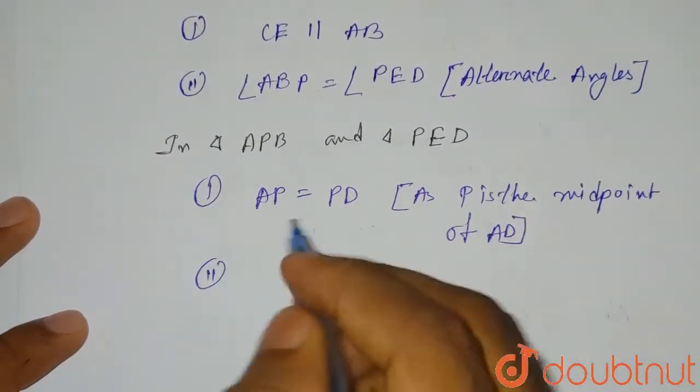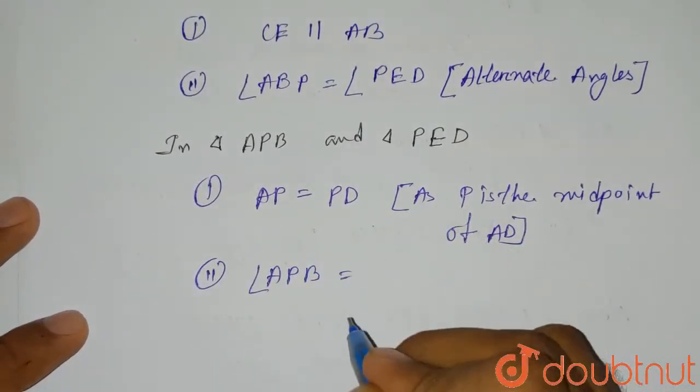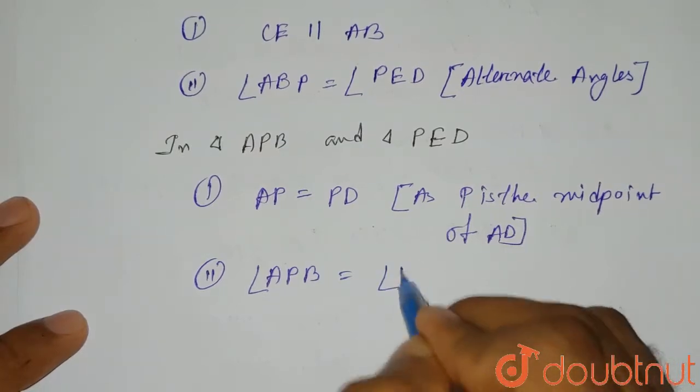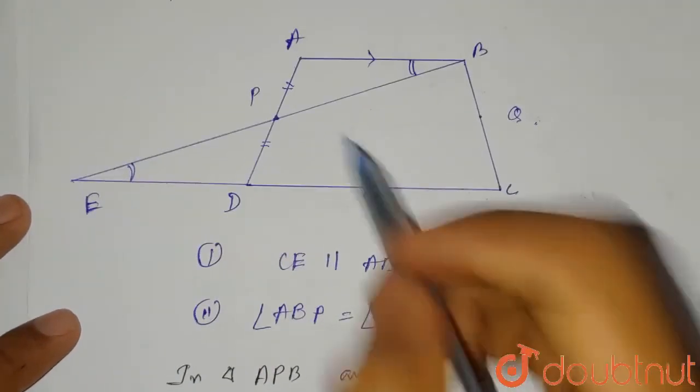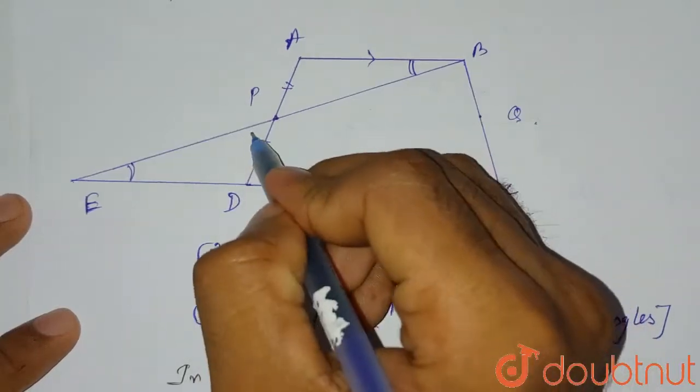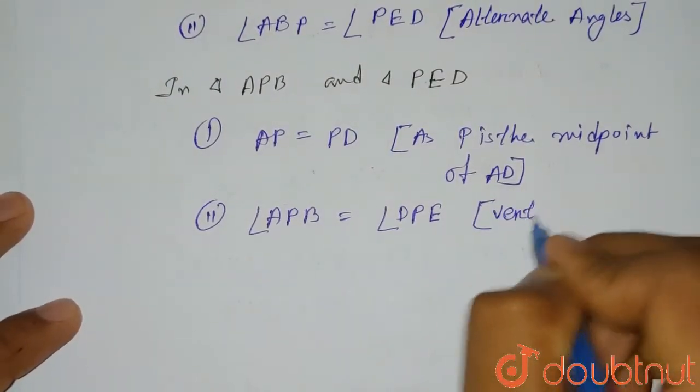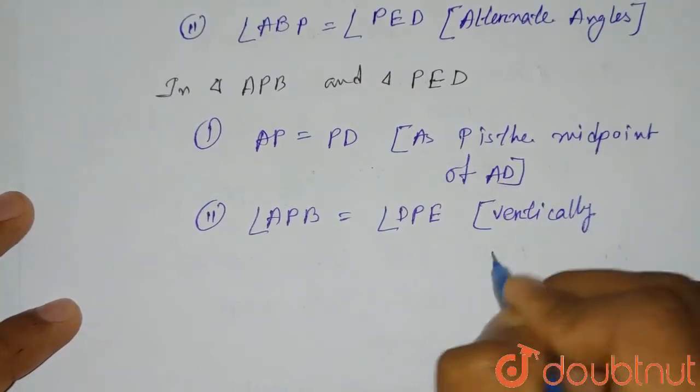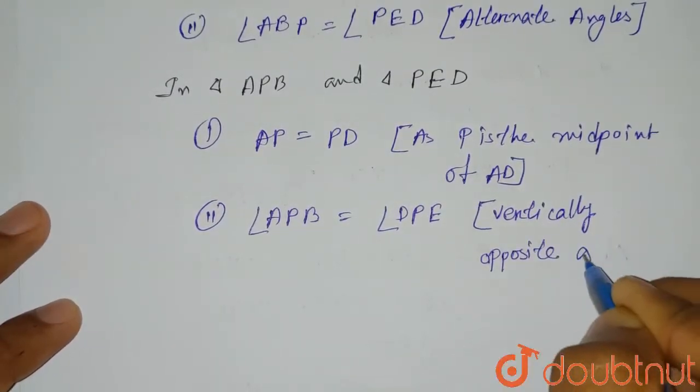Secondly, angle APB will be equals to what? Angle APB will be equals to angle DPE. Why they are equal? APB, DPE, they are vertically opposite angles. They are equal because they are vertically opposite angles.